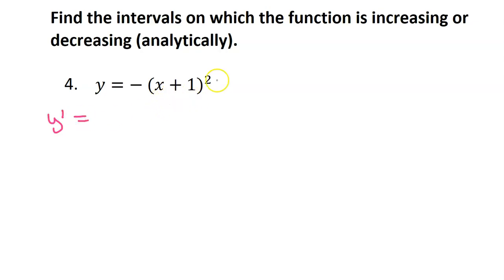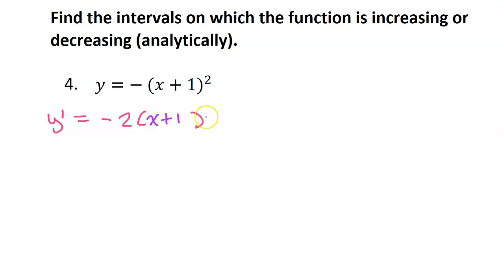This will need the chain rule. So first we take the derivative of the outer function by moving this 2 to the front, reducing this power by 1. But then we do have this inner function, and the chain rule says we need to take the derivative of the inner function and multiply by that. But the derivative of x plus 1 is just 1, so we don't really need to show multiplying by 1. So this is the derivative.